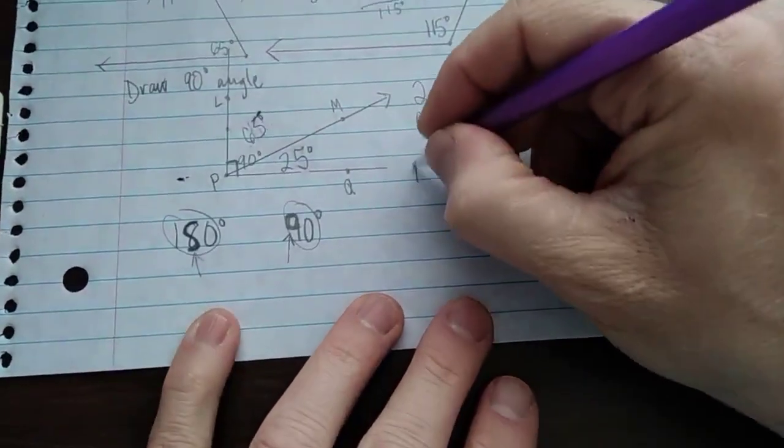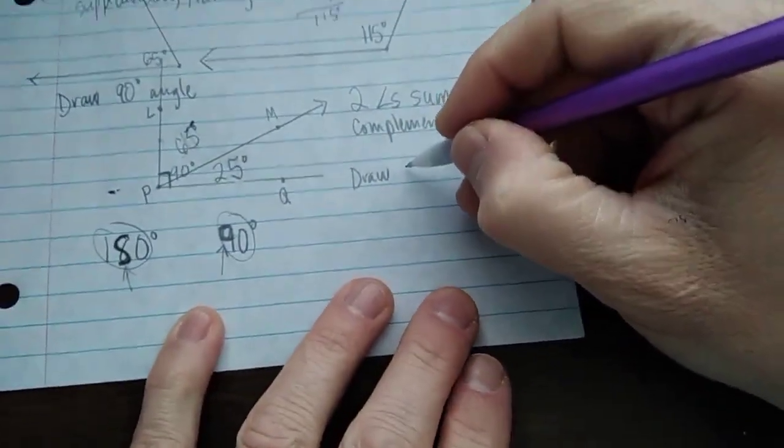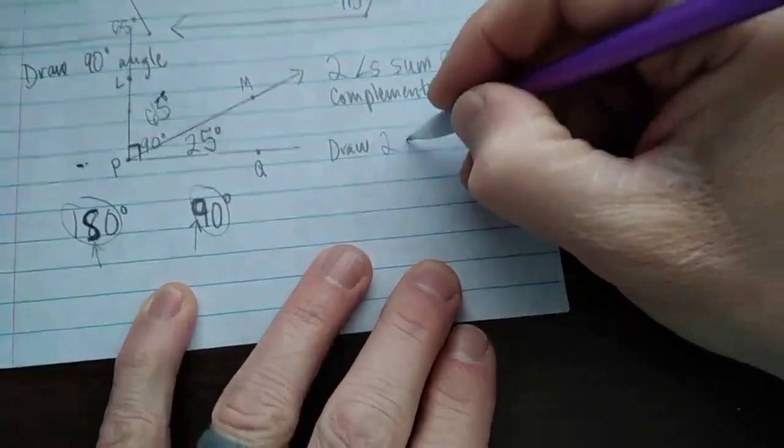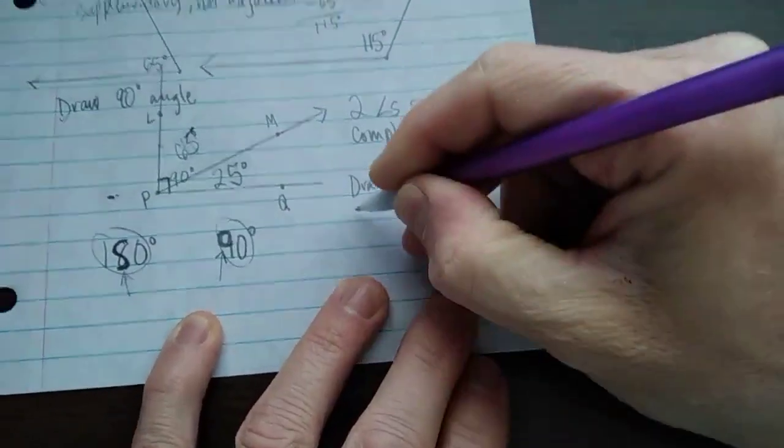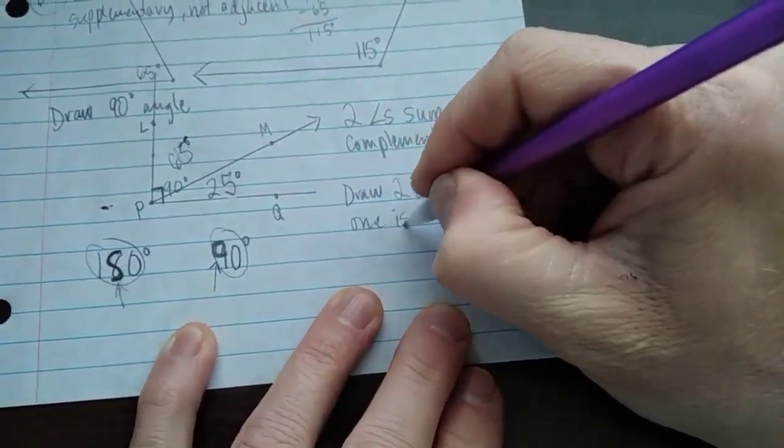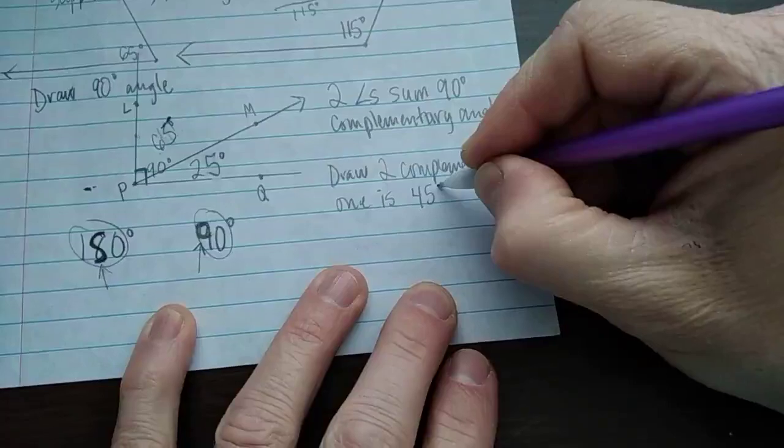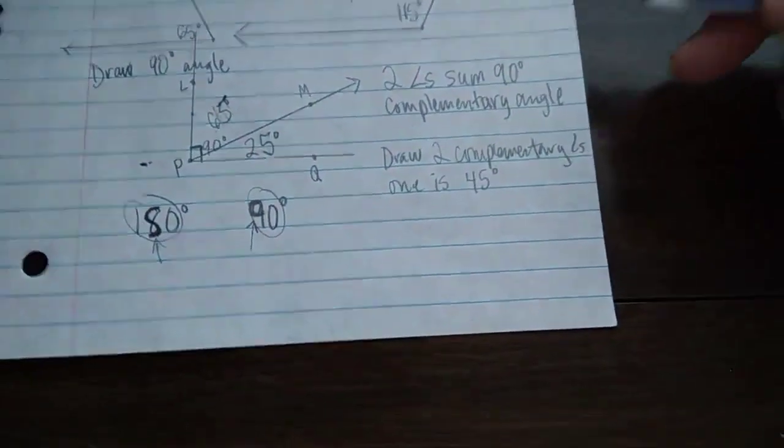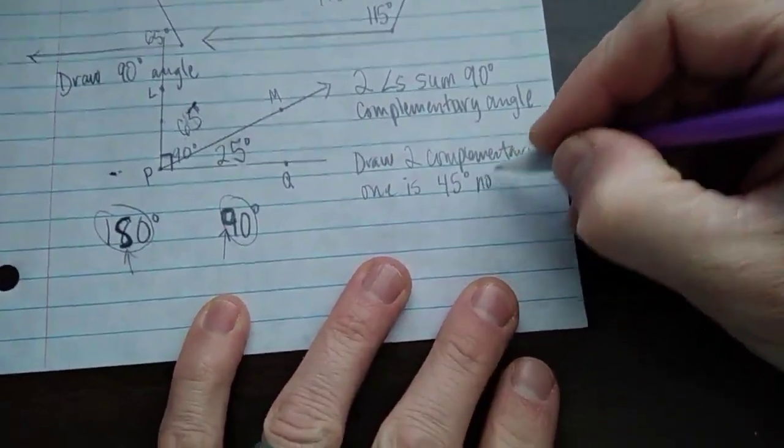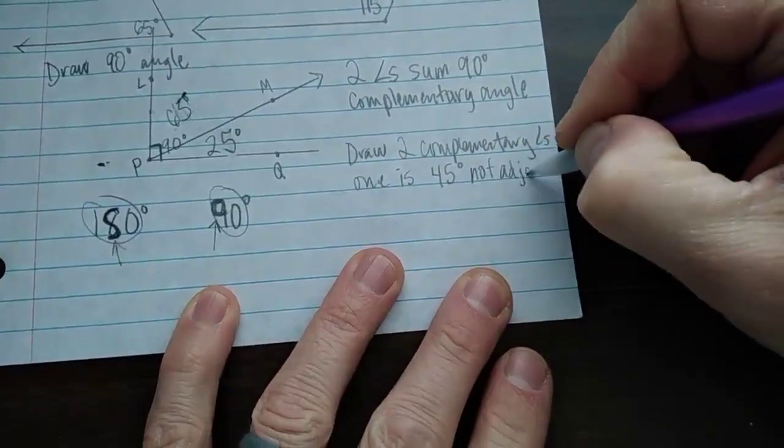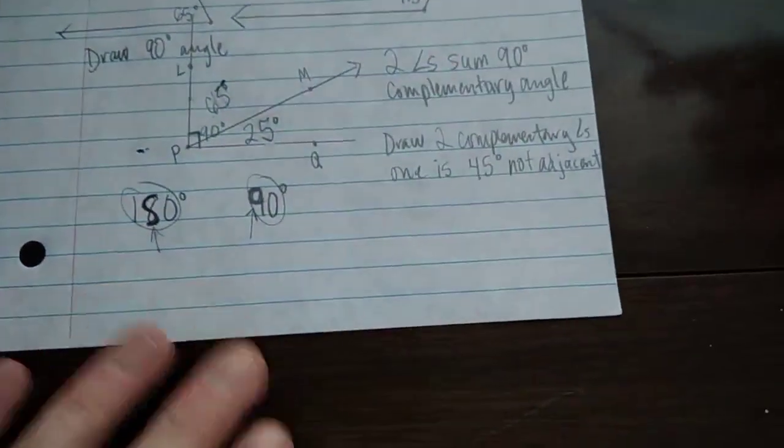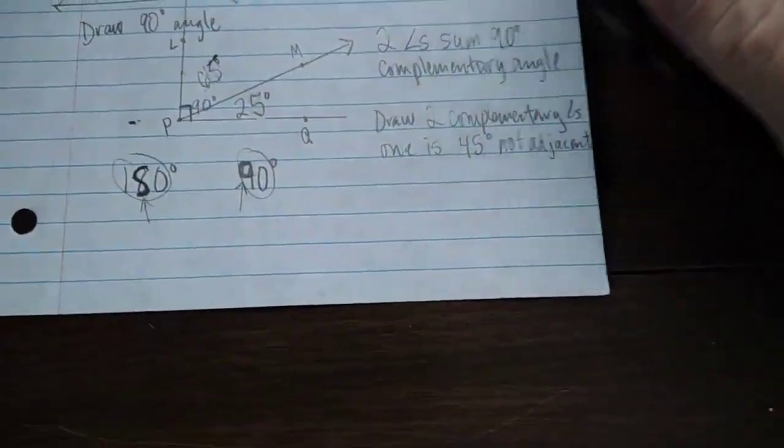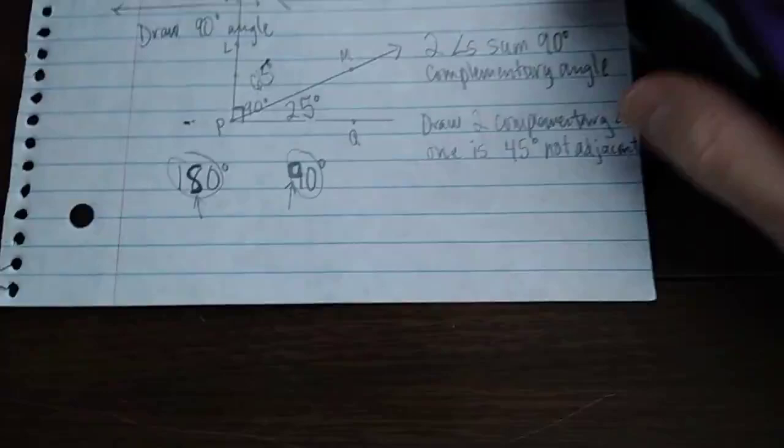So, now I want you to draw two angles and one of them, two complementary angles. One is 45 degrees. And this one would be not adjacent. Just because we've already drawn one that is adjacent. So, you can pause the video and try it on your own or you can do it with me.